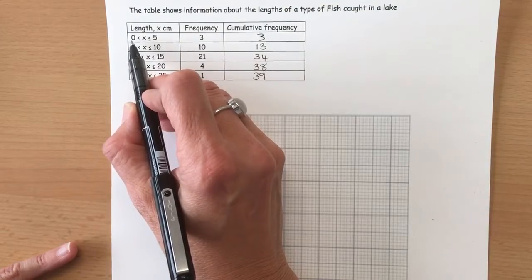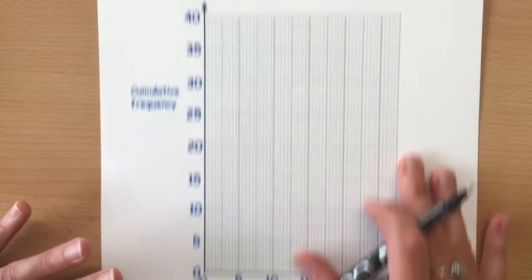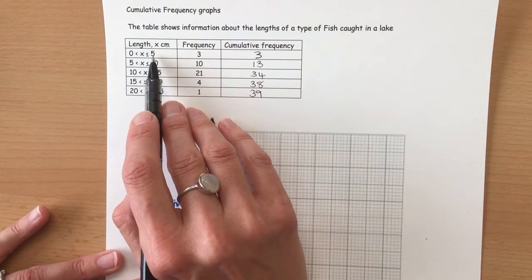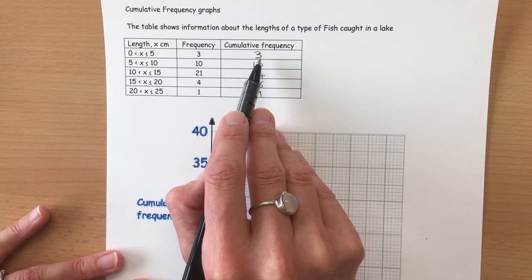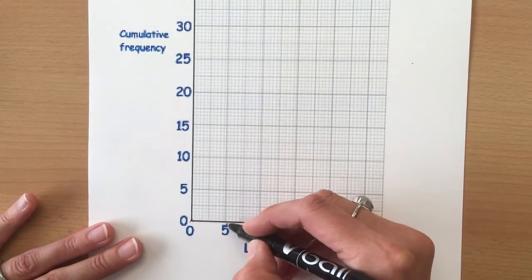We start here at zero. Then the first row ends at five and the cumulative frequency is three, so when we get to five at the bottom we need to find three here.